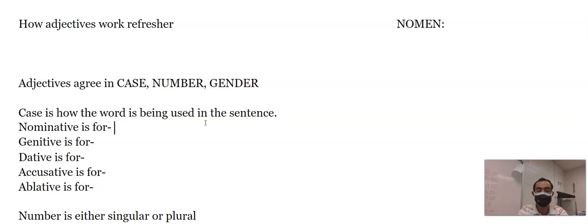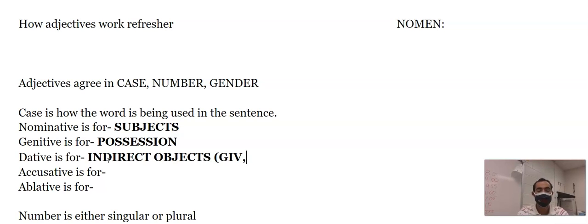We got the nominative case, which is used for subjects. The genitive, which we won't have not for a little bit, is for possession. The dative is used for indirect objects. So think of words like give, bring, carry, tell, hand over. All of those take datives.